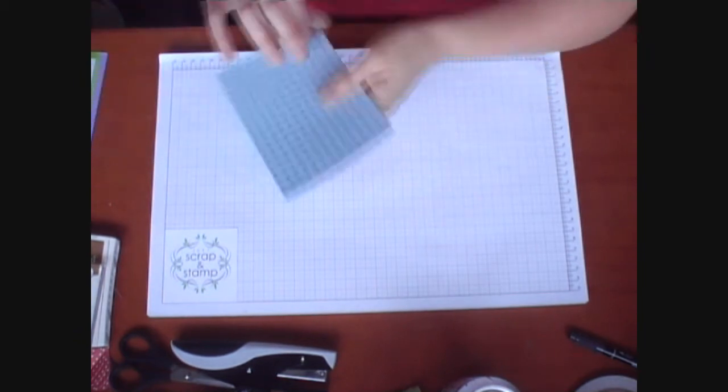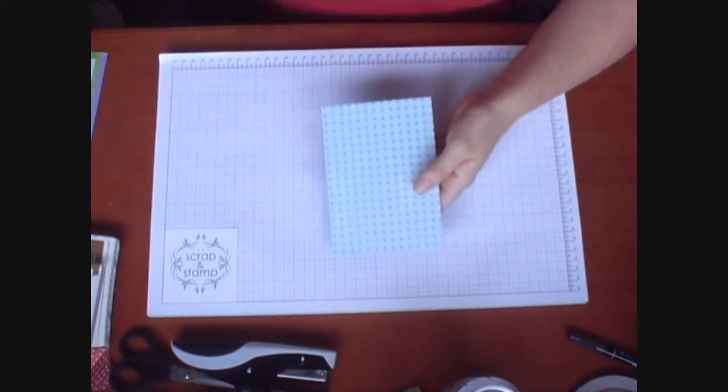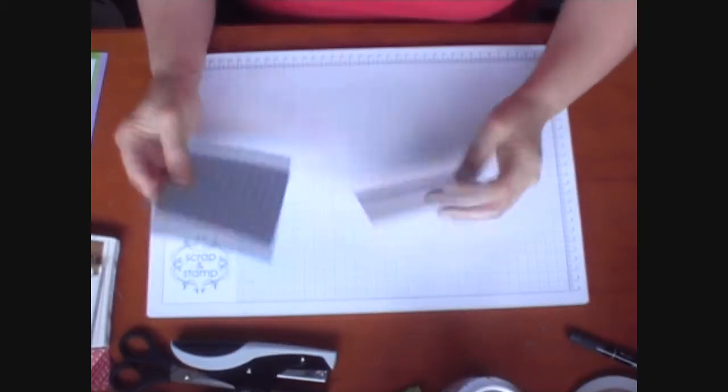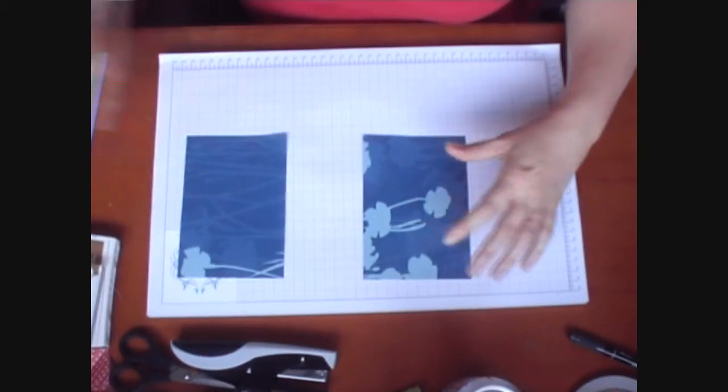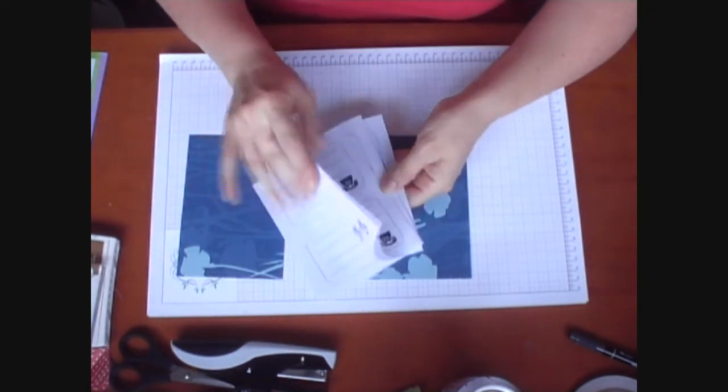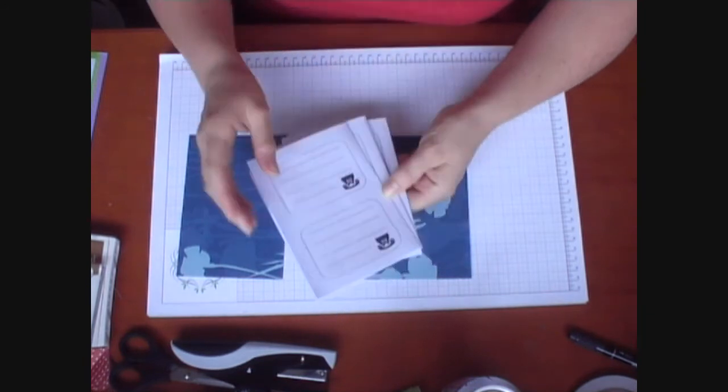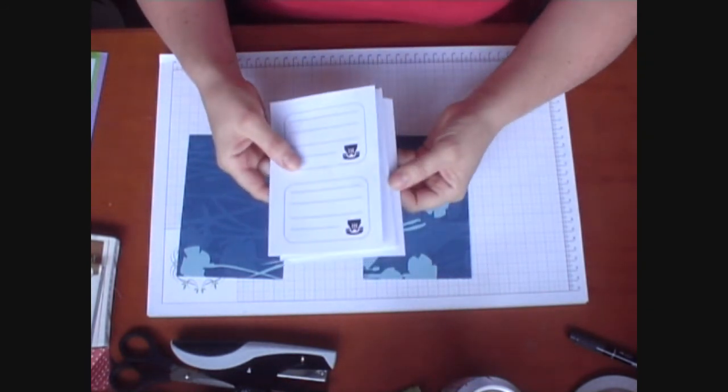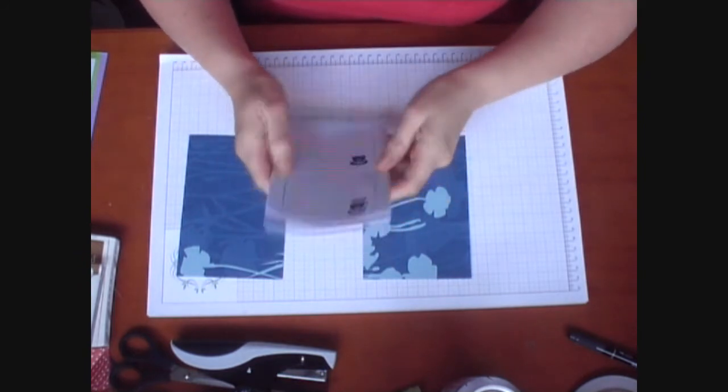So to start off with, I've got two pieces of patterned paper. I'll put the measurements on the screen for you when I edit the video. And then I've also got some little phone pages that I've designed. These are available to download for free on our website. So you can just log on to www.justscrapandstamp.com.au and get the free download for those.